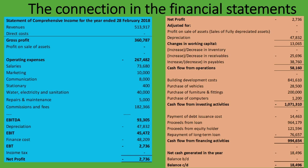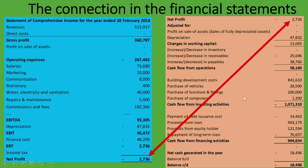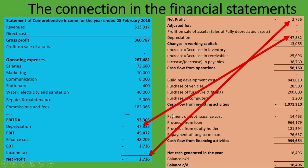Now let's look at the connection between the income statement and the cash flow statement. Using the indirect method, the net profit from the income statement is the very first item in the statement of cash flows. Additionally, depreciation — which is a non-cash item — is taken from the income statement and added back as a positive in the statement of cash flows, even though it appeared as a negative in the income statement.